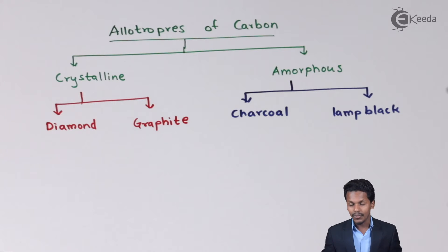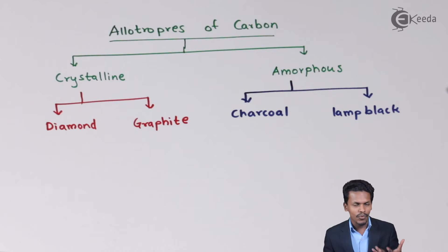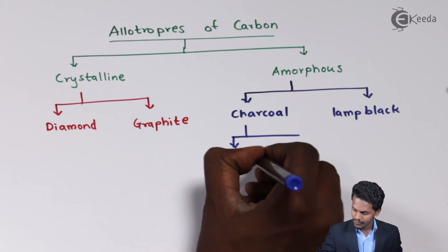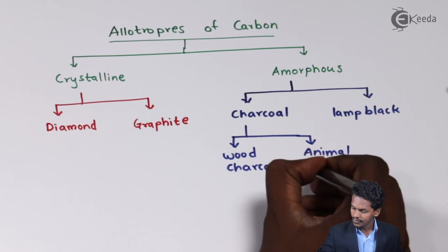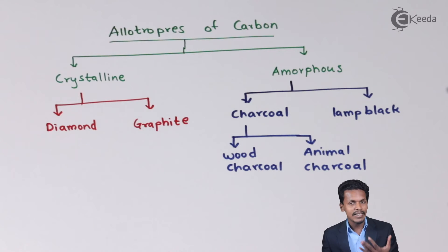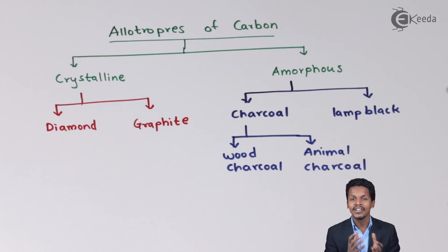Charcoal can be obtained from animals as well as from plants, trees, or wood. Therefore, charcoal is further divided into wood charcoal and animal charcoal. Charcoal is made up of carbon and undergoes combustion reactions, releasing heat, making it an energy source used in various industries.